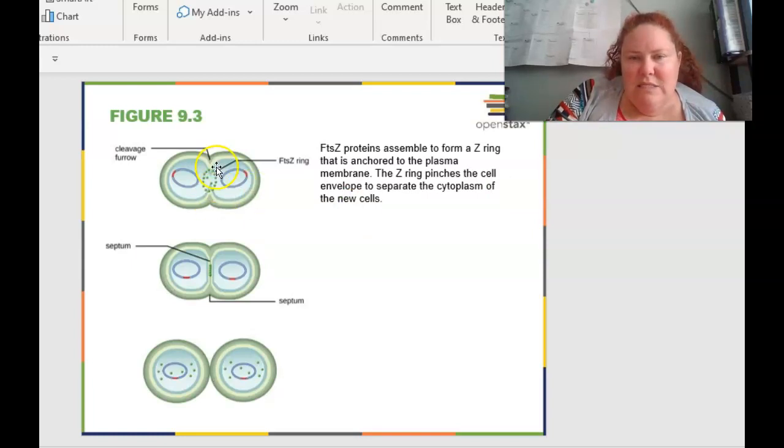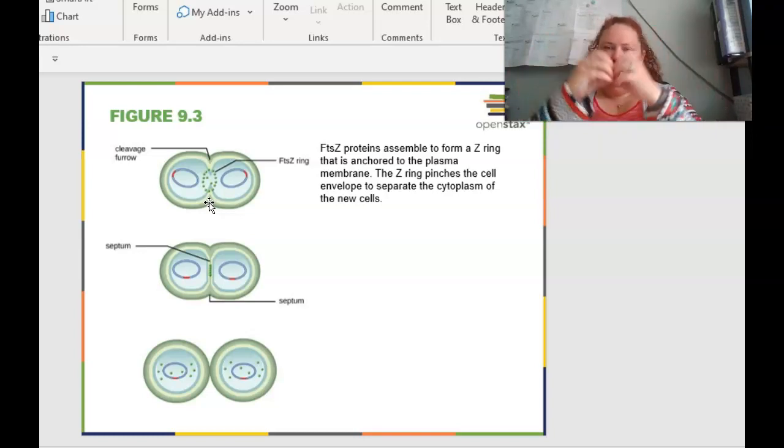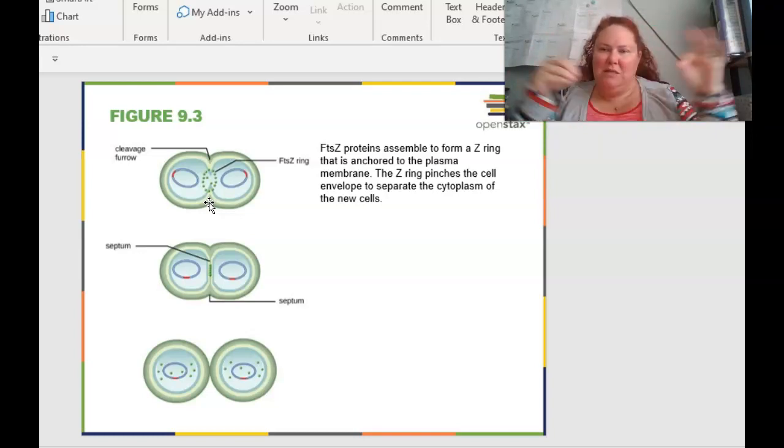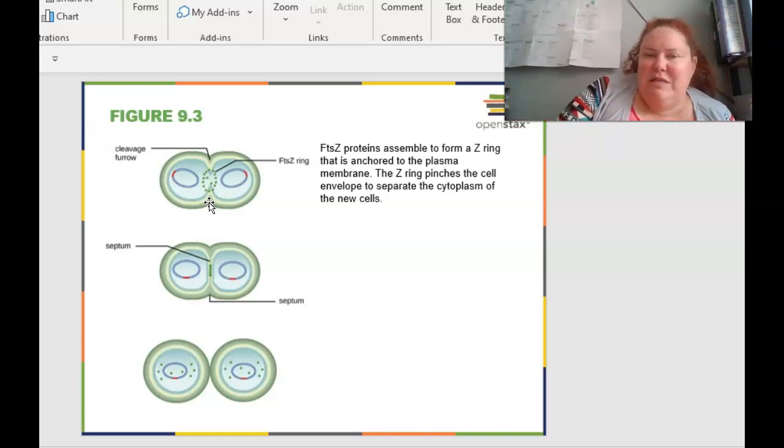FtsZ proteins are going to assemble to form a Z ring that you can see here in the dotted line. And this Z ring is anchored to the plasma membrane. And the Z ring pinches the cell envelope to separate the cytoplasm of new cells. As you can see here, it's kind of like if you guys have ever kneaded bread or made bread, you can pinch it off or you can use a rubber band to put things in the middle and it causes two things to separate. So this is what that FtsZ ring and that Z ring is going to do.